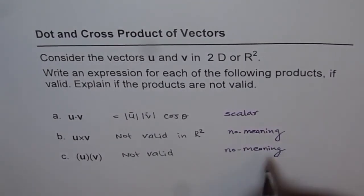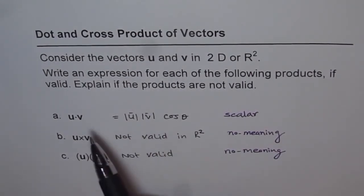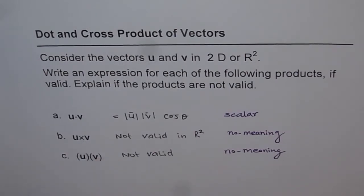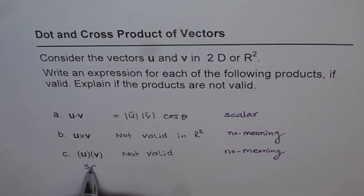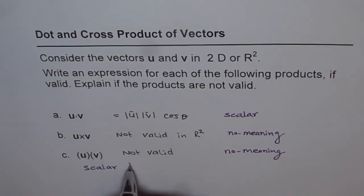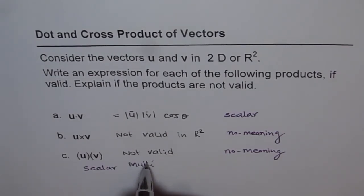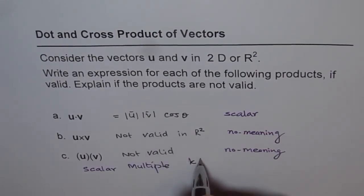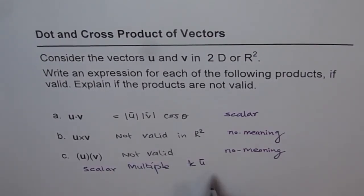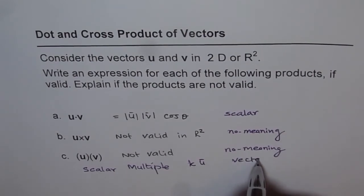In vectors, we have only two types of products: u dot v and u cross v. And the third type of product we have is a scalar multiple. That means k times any vector, which will be a vector.